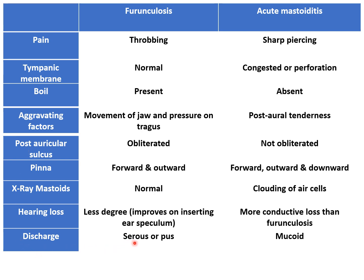Regarding ear discharge: in furuncylosis the discharge may be serous in nature, but when infected, frank pus is seen. While discharge from acute mastoiditis is generally mucoid in nature — meaning it stretches, is sticky and thick, and forms a string-of-pearls appearance, which is called mucoid.